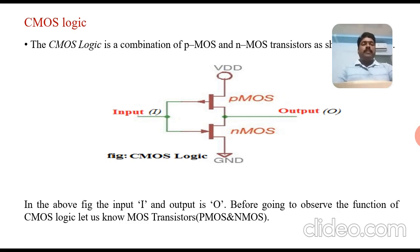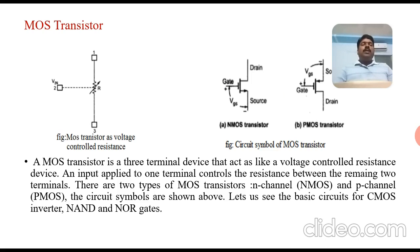MOS transistors consist of three terminals: gate, drain, and source. The source stores charge particles and the drain collects charge particles from the source through a channel. If a channel is available between source and drain, charge particles move toward the drain when external voltage is applied. The channel is established by the gate voltage. This MOS transistor is called a voltage controlled resistance device.